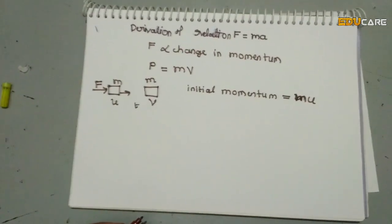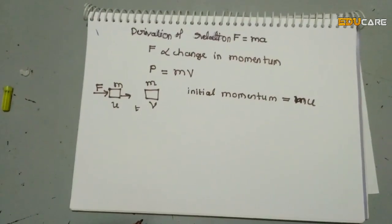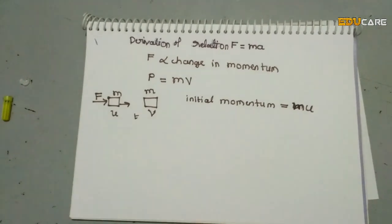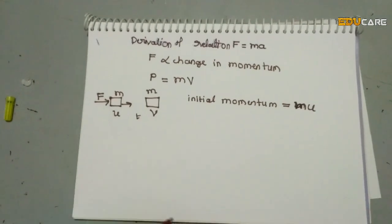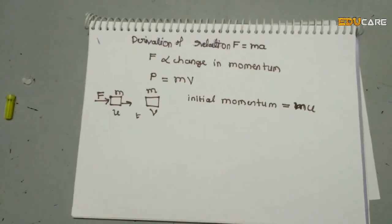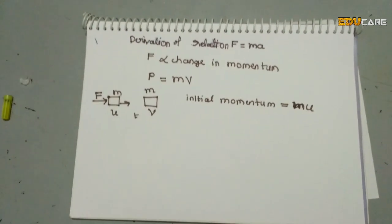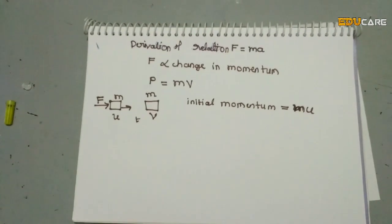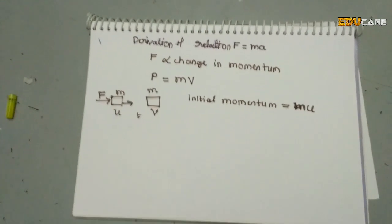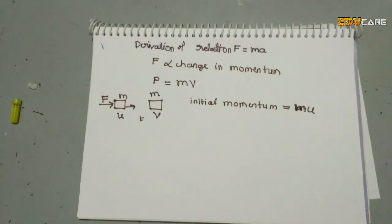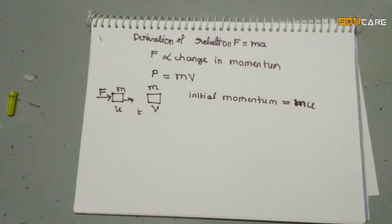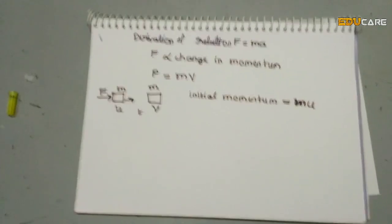The initial momentum is m into u. The final momentum is m into v. The mass remains the same, that is m, and the velocity increases to v. Then the final momentum is given by m into v.